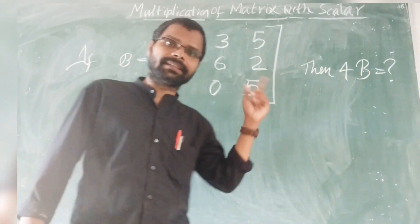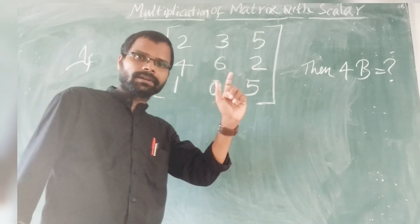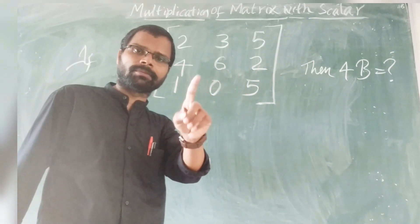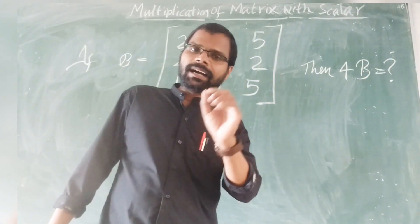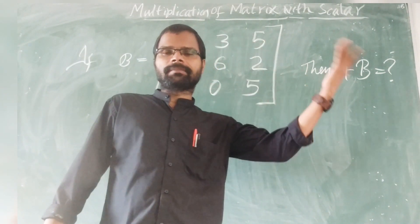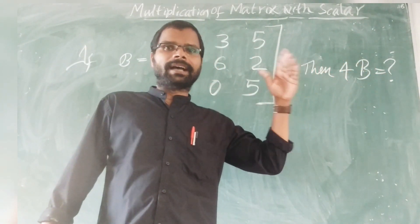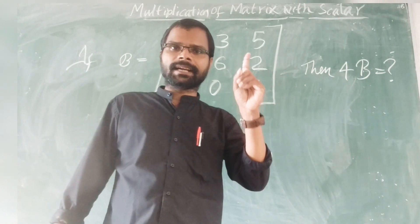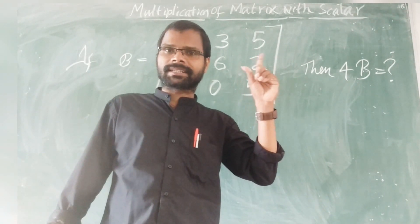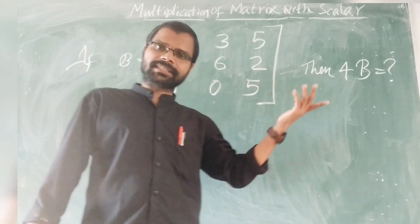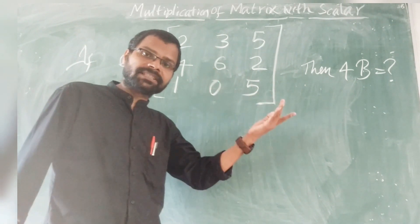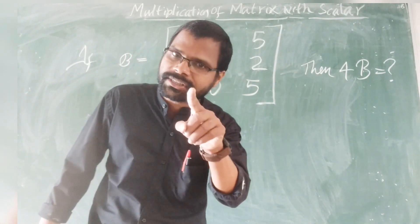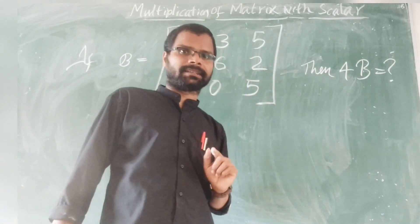Let's see. That is, one Matrix in a row. The elements of the Matrix are multiplied by a constant number. That constant number is multiplied with each element.